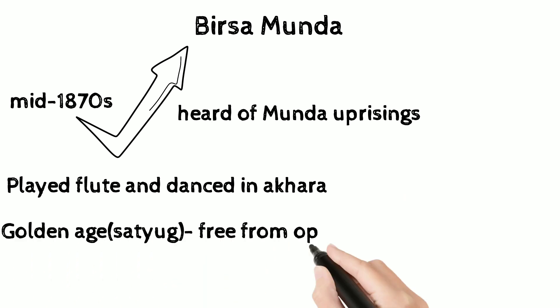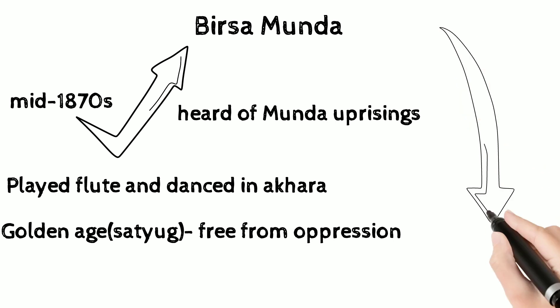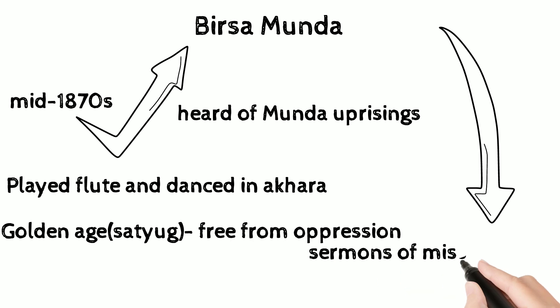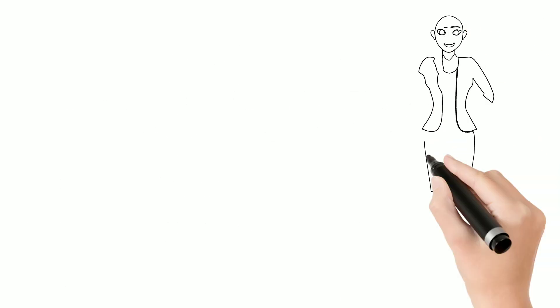He referred to a golden age as Satyug — an age considered free from oppression. He also heard sermons of missionaries who talked about the kingdom of heaven and moral conduct. But this instilled a feeling of revolt in him. He was also influenced by Vaishnava preachers who talked about purity and devotion towards God.